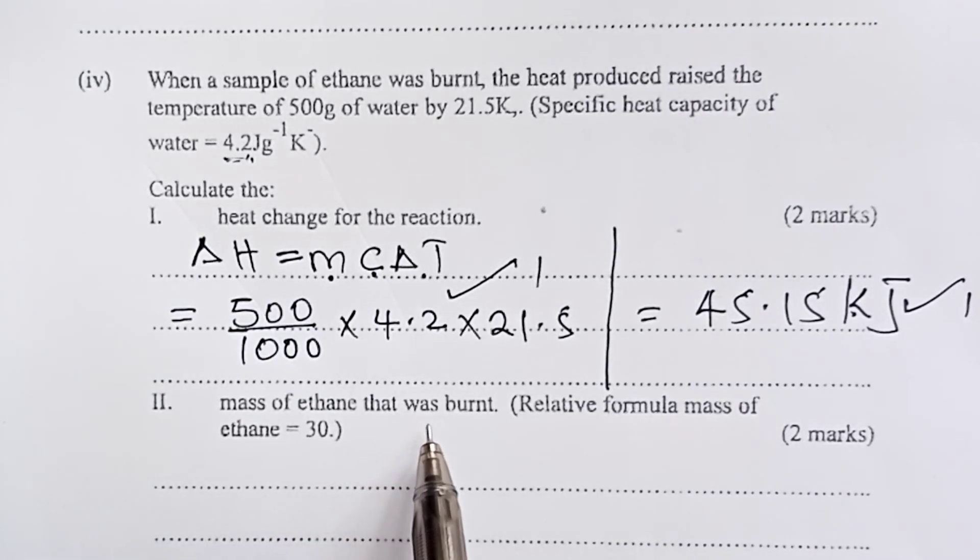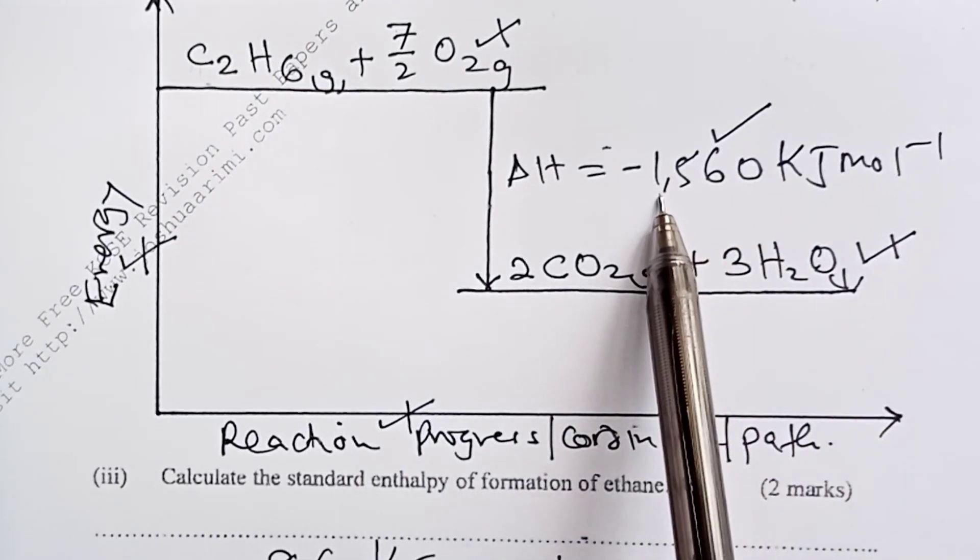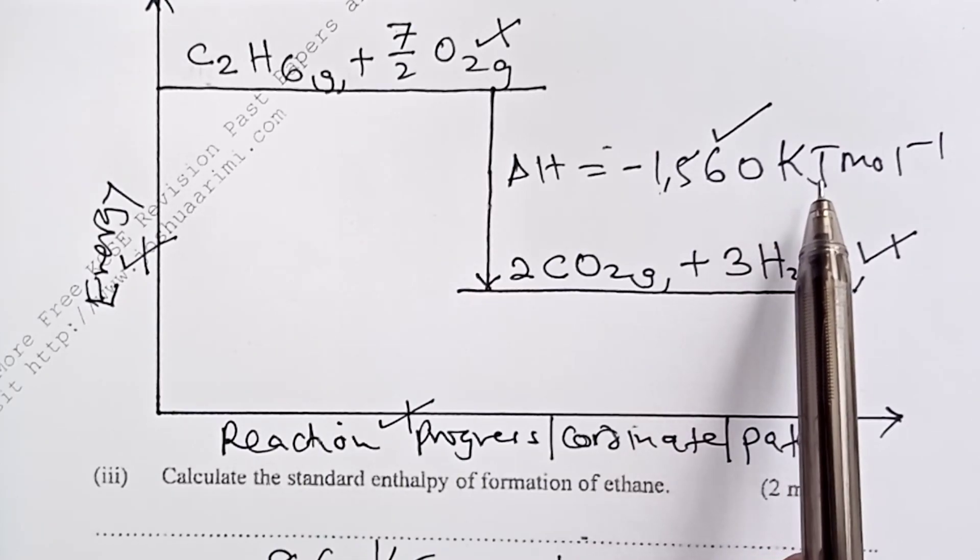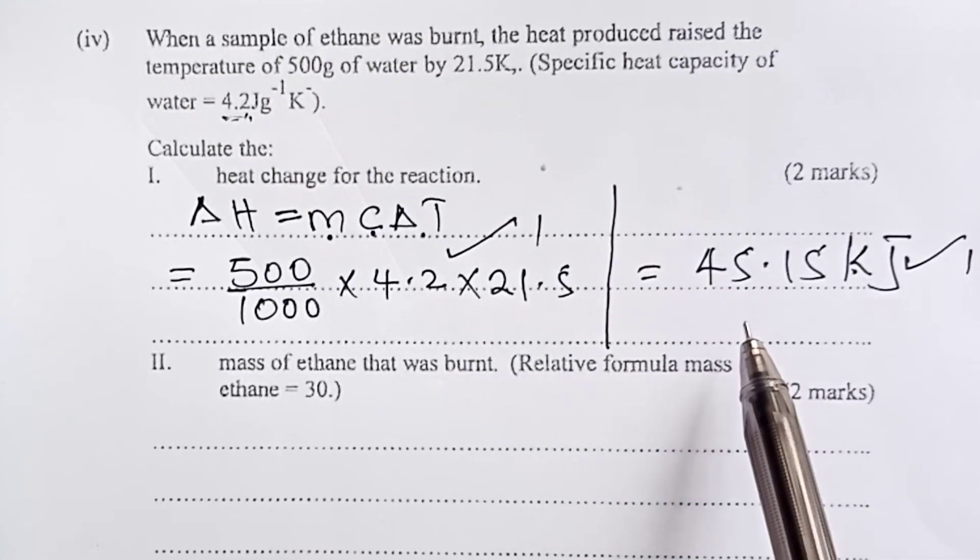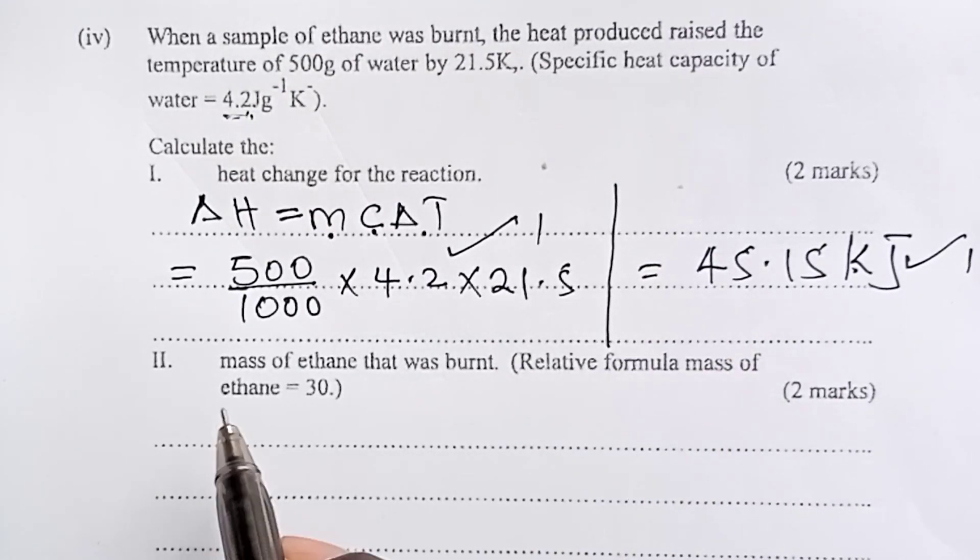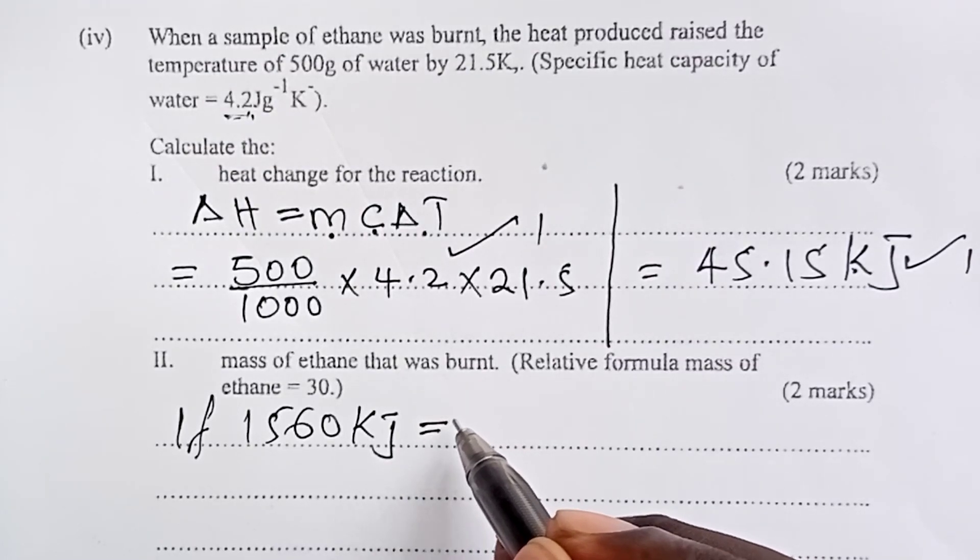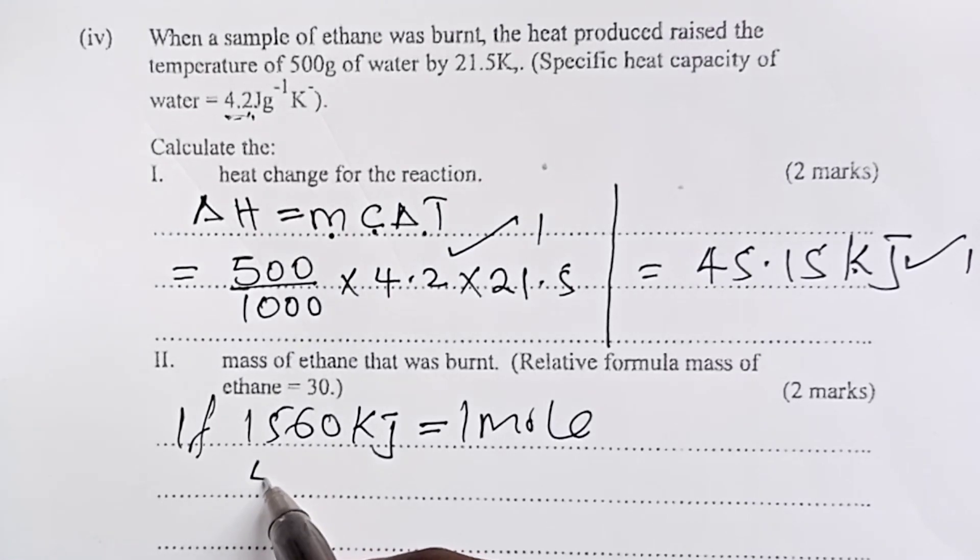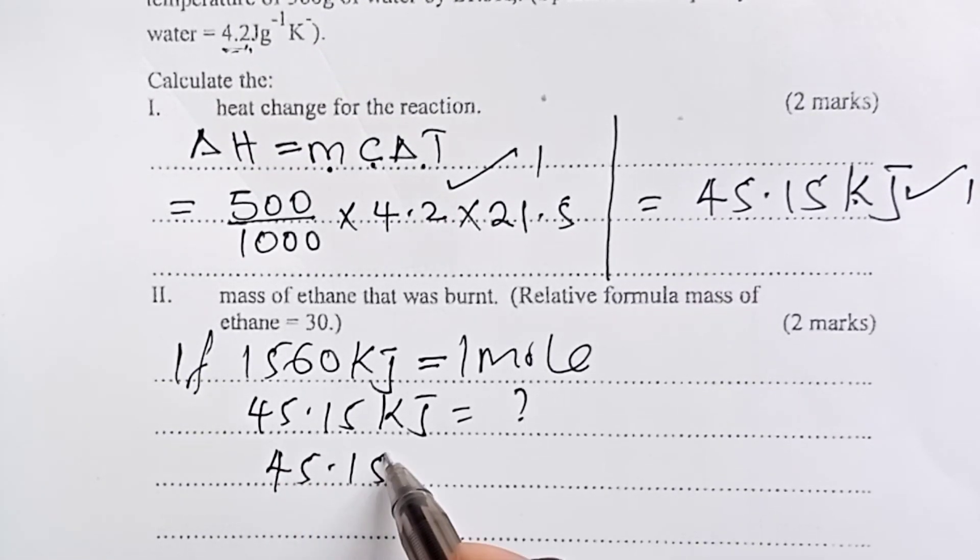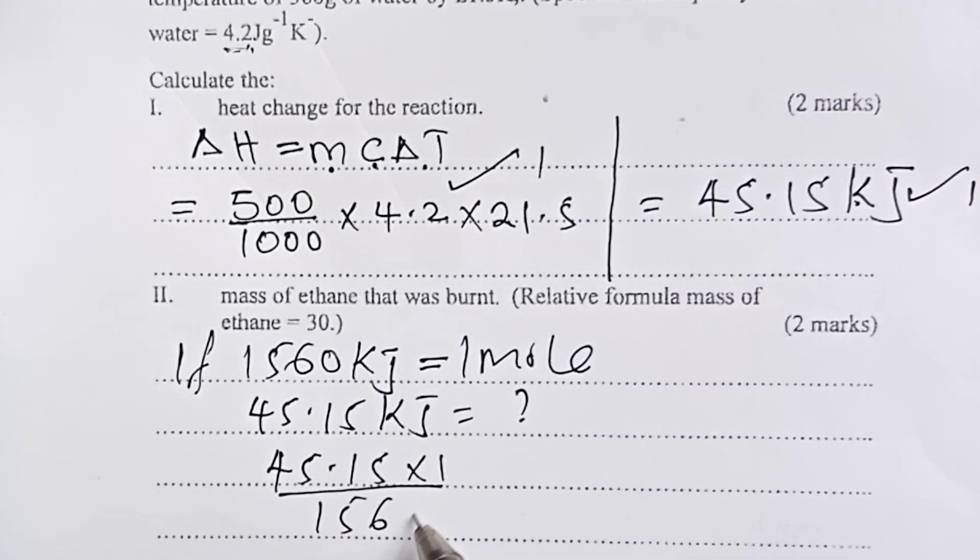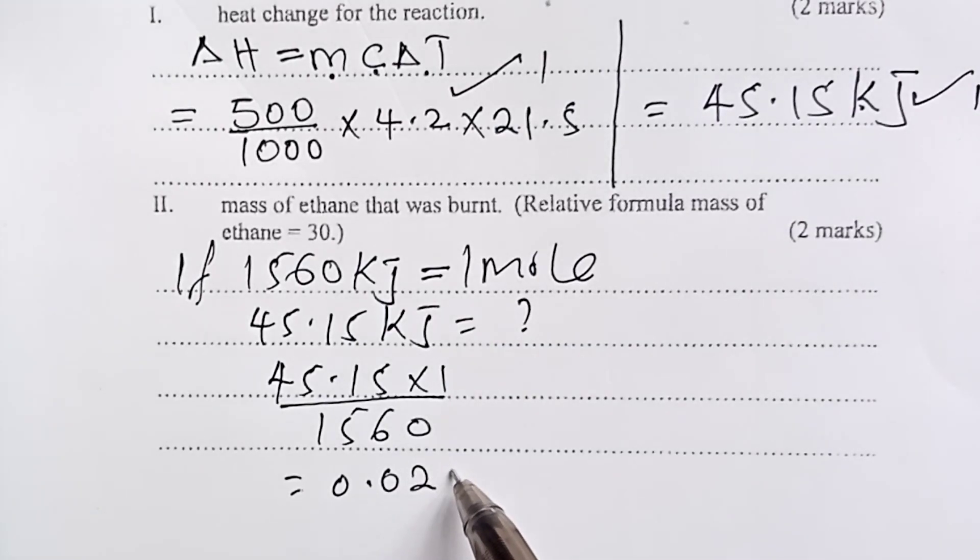Lastly, mass of ethane that was burnt. So, in our energy level diagram, we have negative 1,560 kilojoules that are produced when you burn one mole of ethane. So, to get answer to this question, we need to relate that to this amount of heat that we obtained from our experiment. So, we would say that if 1,560 kilojoules is obtained by one mole of ethane, we only got 45.15 kilojoules. So, how many moles did we burn? Cross multiplication gives 45.15 times 1 divided by 1560. And that gives me 0.02894 moles.